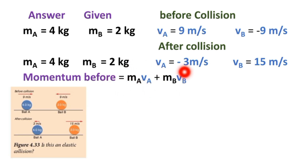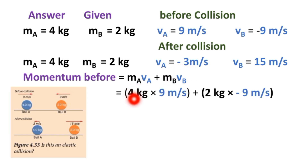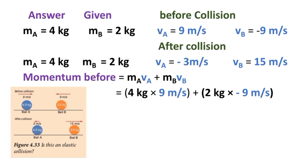Momentum before is equal to momentum of ball A plus momentum of ball B. Momentum of ball A = mass of A × velocity of A = 4 kilogram × 9 meter per second. Plus momentum of ball B = mass of B × velocity of B = 2 kilogram × (minus 9) meter per second.